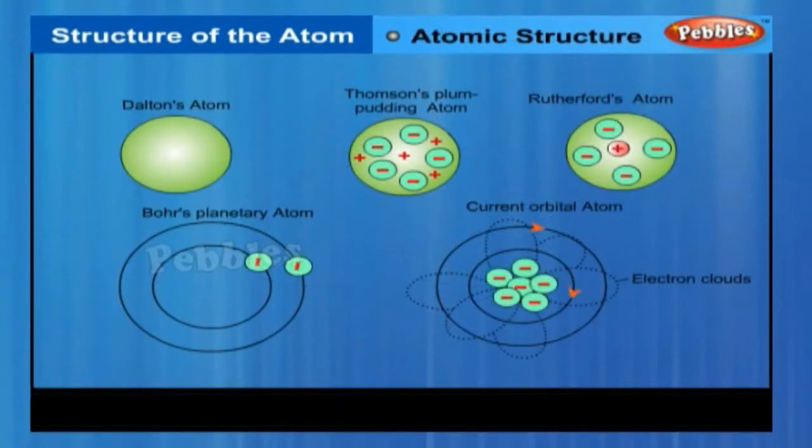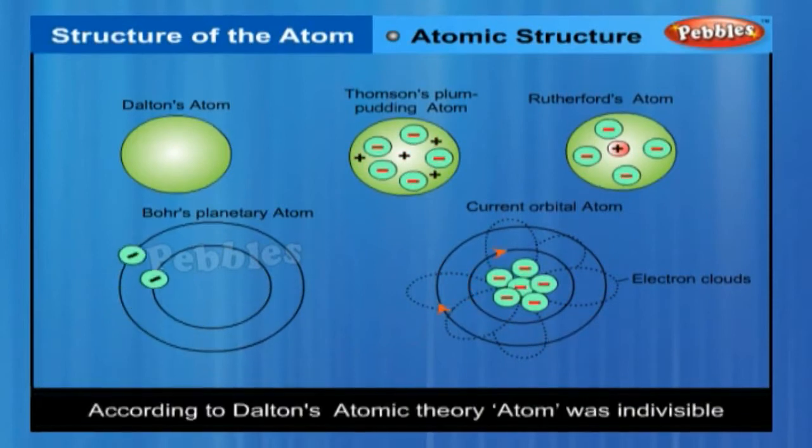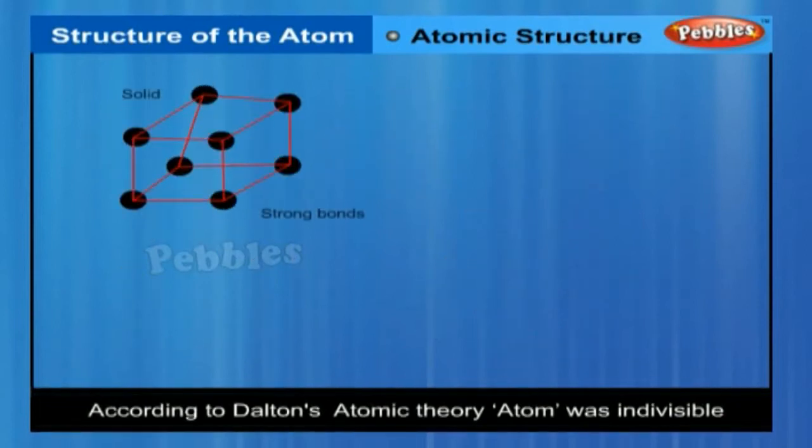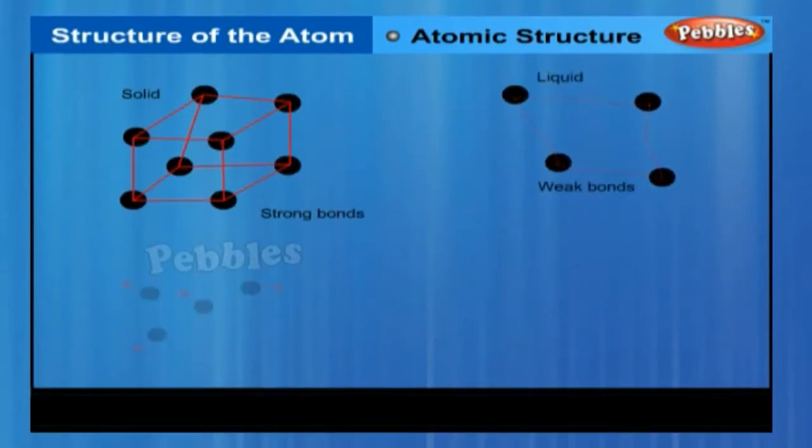The Structure of an Atom. The word atom, derived from a Greek word which literally means indivisible. According to Dalton's Atomic Theory, the atom was indivisible and a neutral particle. But Dalton's model of the atom could not explain how electricity could interact with matter.